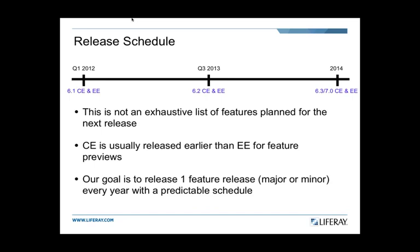Looking at the release schedule, we're targeting LifeRay 6.2 Community Edition in Q3 of 2013, with the EE version available in early Q4 of 2013. What I want to go over today is not an exhaustive list of features planned for 6.2, but a high-level overview of the more important features. For the last 10 minutes, we'll give you a hands-on feel for some of the improvements, particularly around web content management.